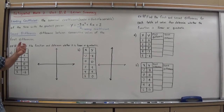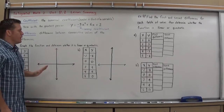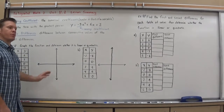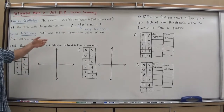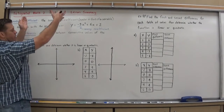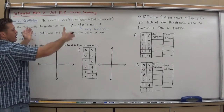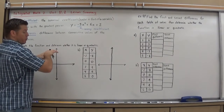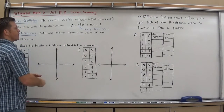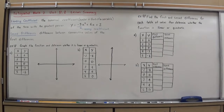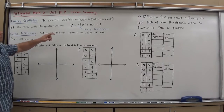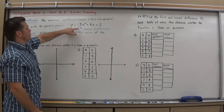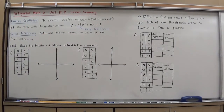If this were a linear equation, a negative leading coefficient means it's sloping down, and a positive means sloping up. With a quadratic, it means both parts of our parabola are opening up if it's positive, or down if it's negative. Just know: positive opens up, negative opens down.